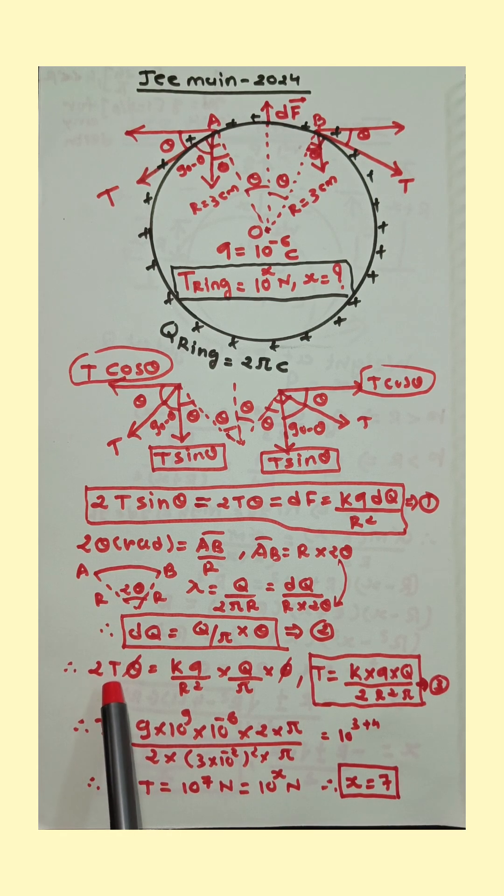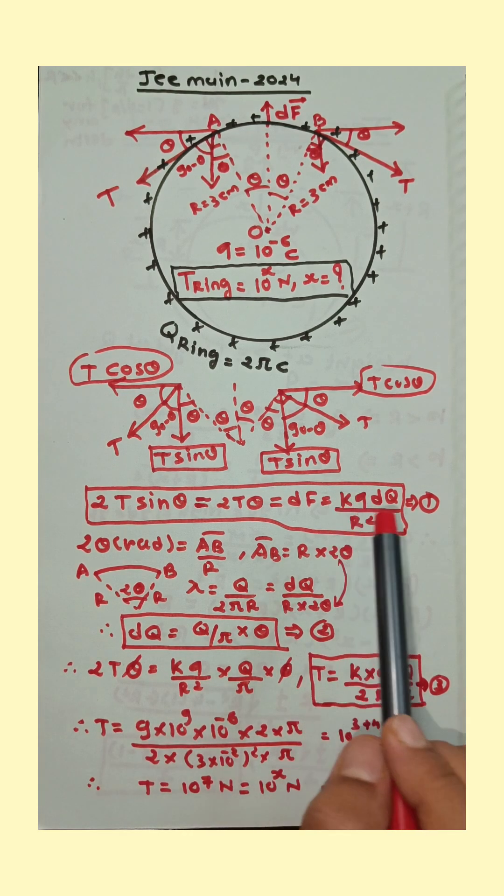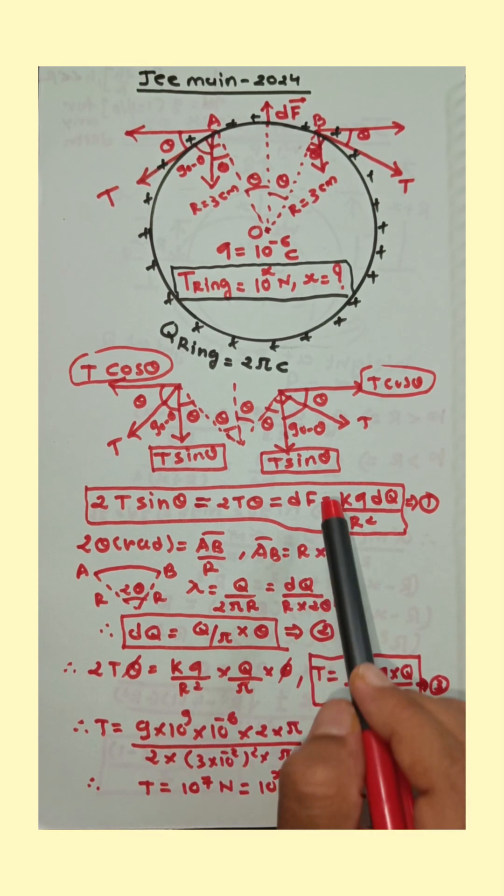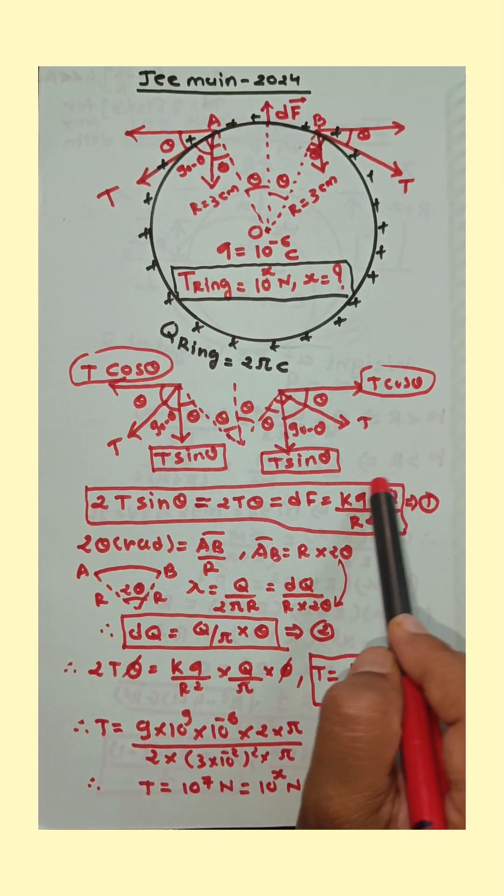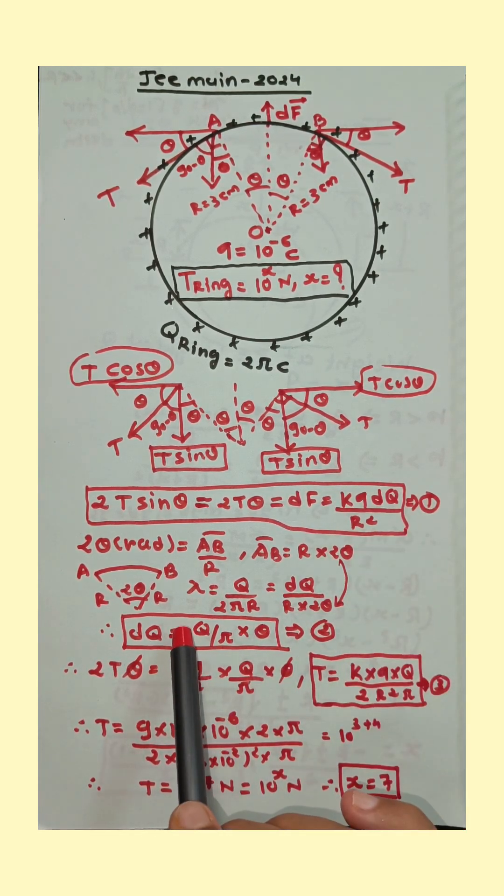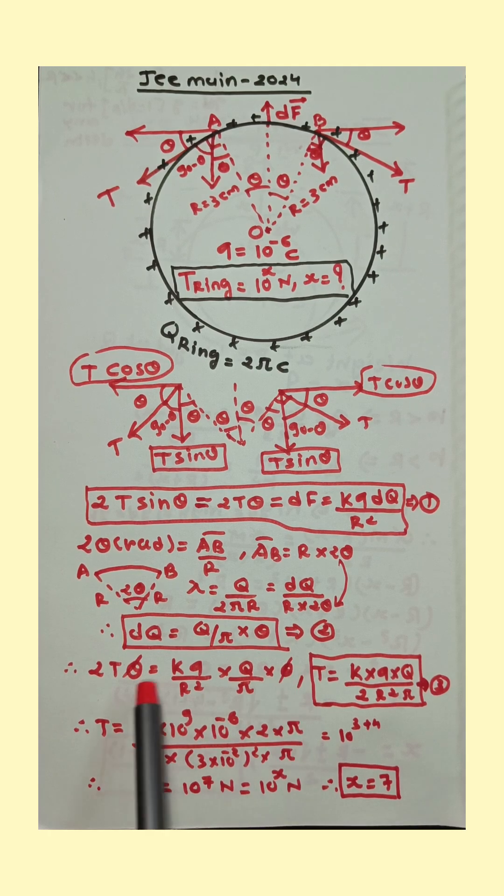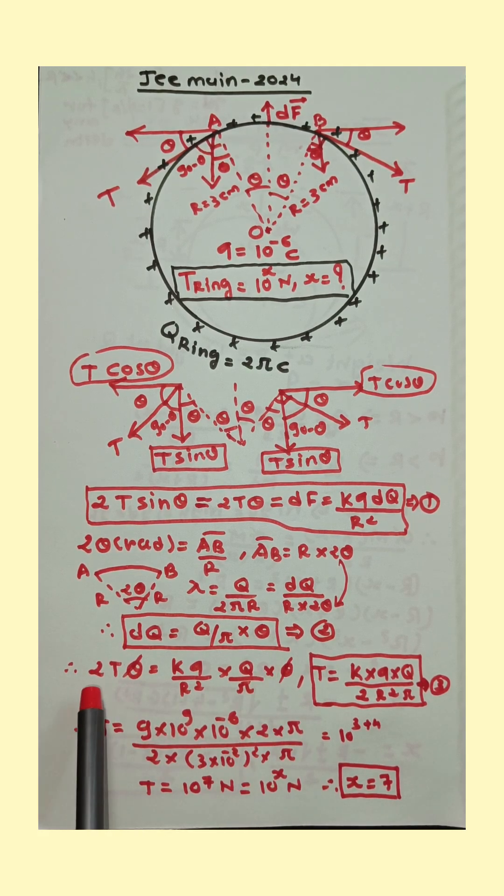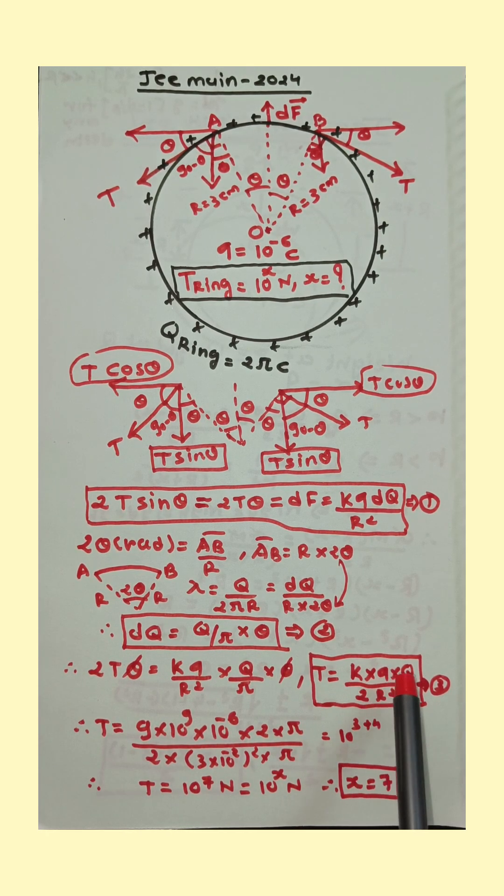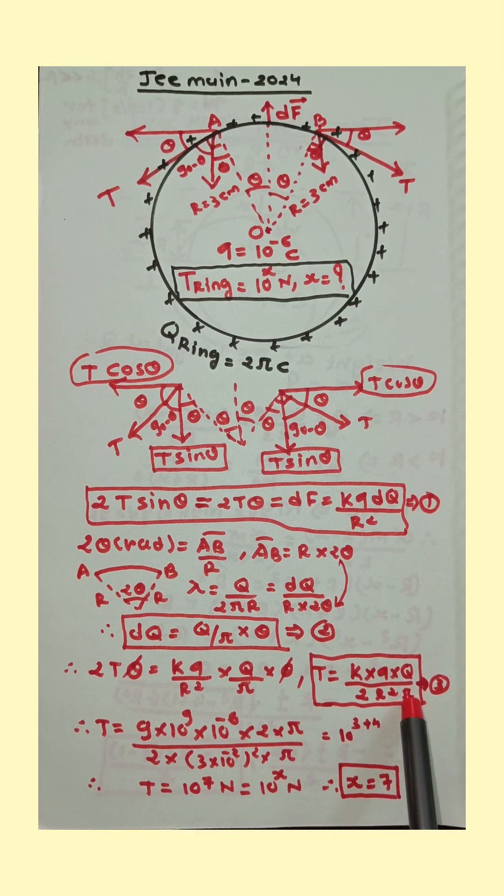Now here 2T theta is equal to k q upon r square. And substitute value of dq here. dq is equal to Q by π into theta. Theta theta is cancelled. So T is equal to k q Q upon 2 capital R square into π.